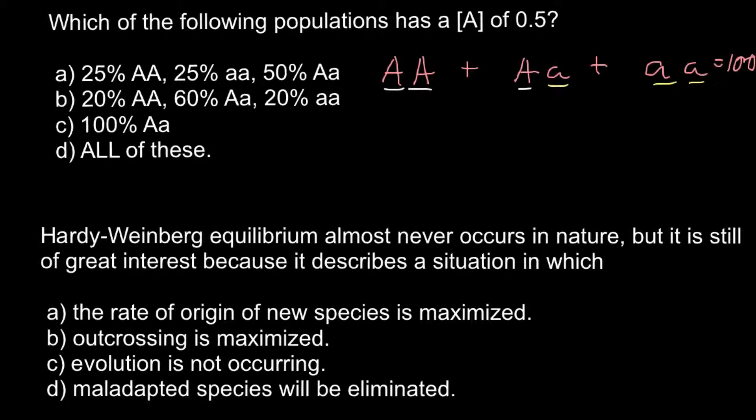In answer A, we have 25% homozygous dominant genotype, 25% homozygous recessive, and 50% heterozygous.